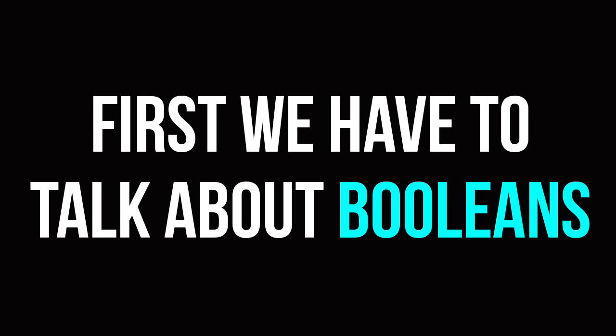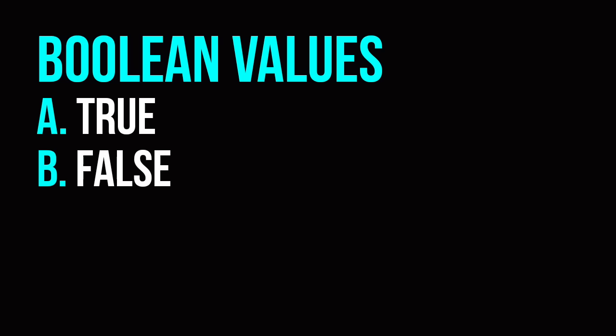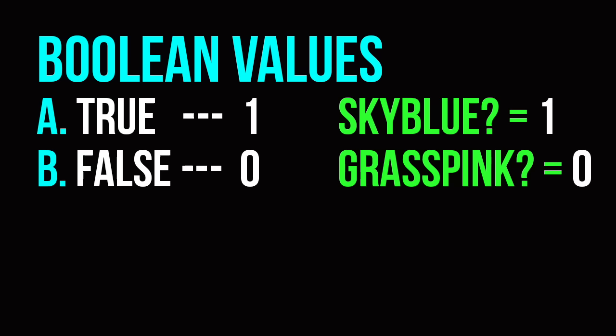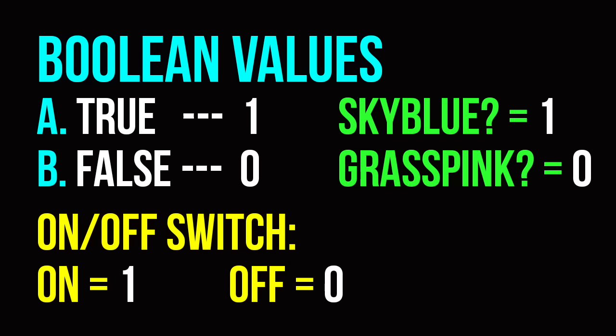Before we start talking about binary, first we have to talk about booleans. Booleans — what are they? Basically they're true or false values. It's a value that can either be true or false, a one or a zero. So we could say, the sky is blue — that's true, one. The grass is pink — that's false, zero. You can also think of it as like an on-off switch. If the light is on, it's a true value; if the light is off, it's false, it's a zero value.